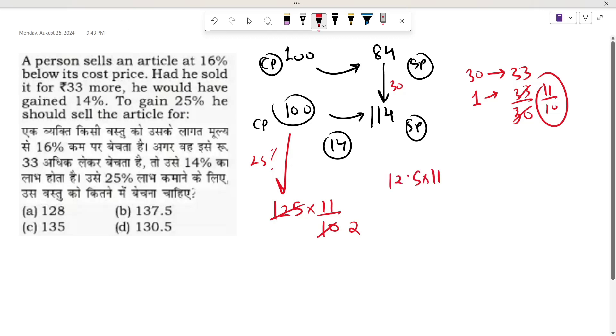And we can solve this. 12.5 into 11 would be 137.5. That is option number three. So this is the answer.